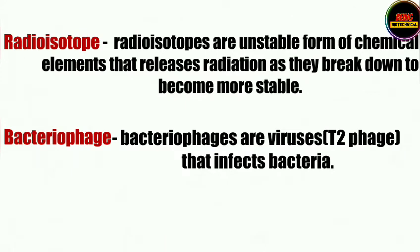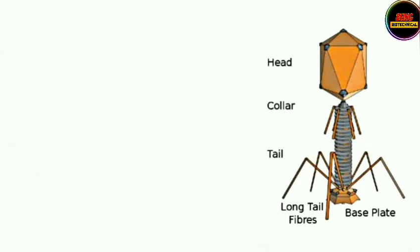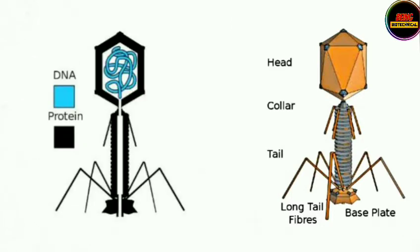Bacteriophages are also simply known as phage viruses. A virus has a capsid head, a collar, sheath, base plate, and tail fibers in its structure. The head portion of the virus contains DNA. So the virus is made up of only two things: protein and DNA. In order to find out which one of them is the genetic material, Hershey and Chase took two radioisotopes.